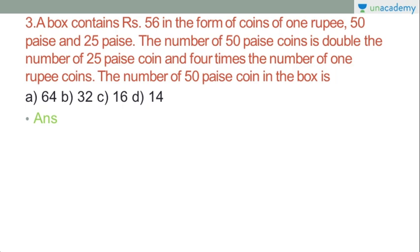This is a very beautiful, complicated question. The number of 50 paise coins is double the number of 25 paise coins, and 4 times the number of 1 rupee coins. Find the number of 50 paise coins. Just take the number of 50 paise coins. When the number of 50 paise coins is double, it is also related to 25 paise coins.